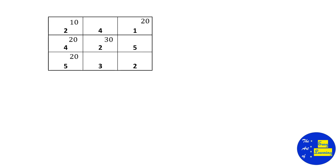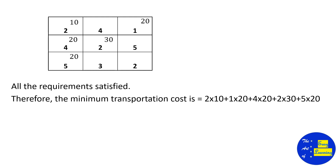This completes the least cost method. Looking at the final table, we have allocated the maximum possible quantities to the least cost values and all requirements are satisfied. Now we calculate the transportation cost: (2×10) + (4×20) + (5×20) + (2×20) + (2×30) + (1×20) = 280. So the transportation cost using the least cost method is 280.